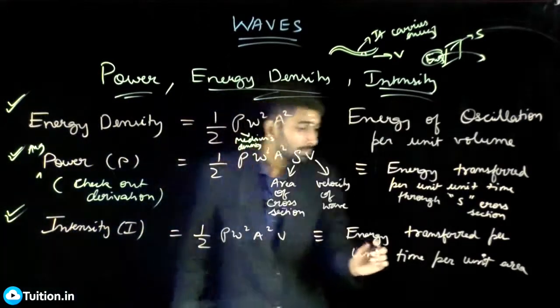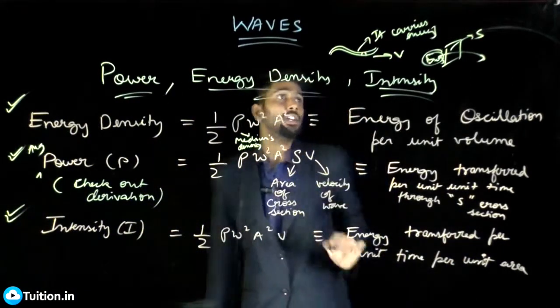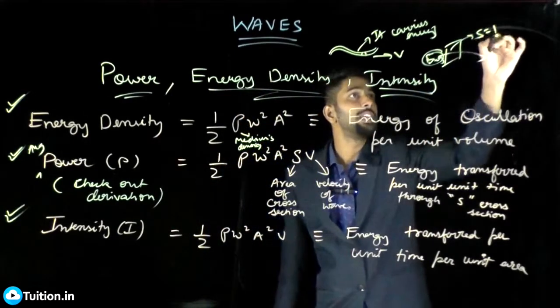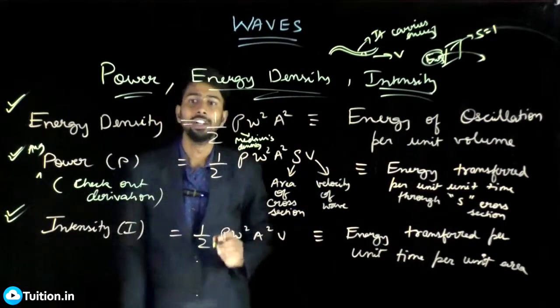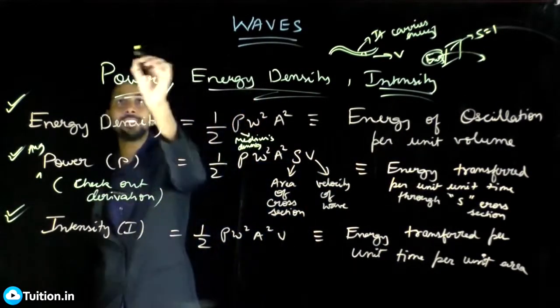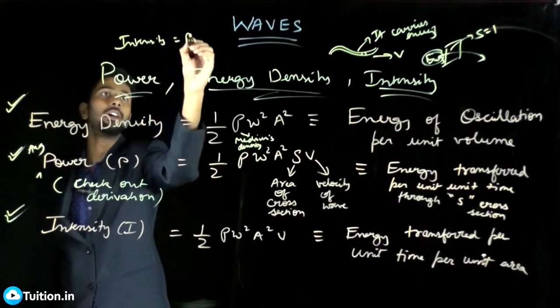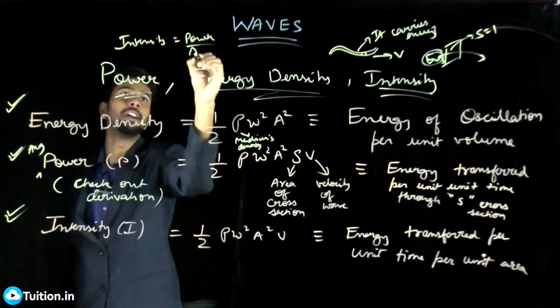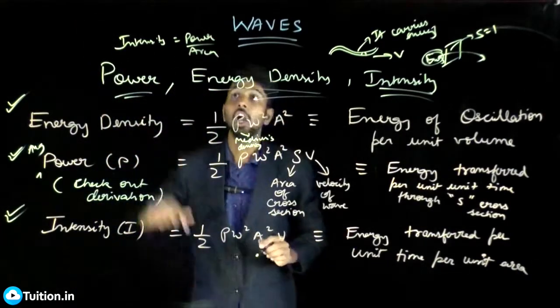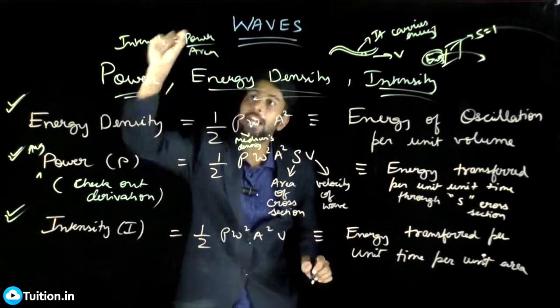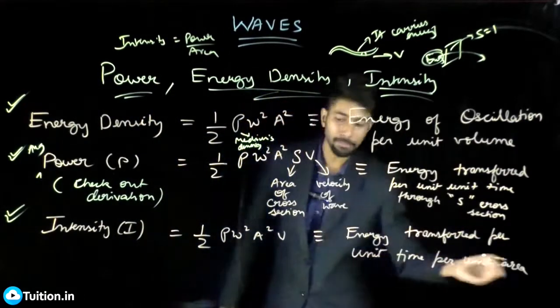Intensity is energy transferred per unit time per unit area. If this area was one, the power that was transferred would be called as intensity. I will say power by area is intensity. Intensity is nothing but power by area. Power transferred per unit area is your intensity, or energy transferred per unit time per unit area is your intensity. That is what I have written here: energy transferred per unit time per unit area.